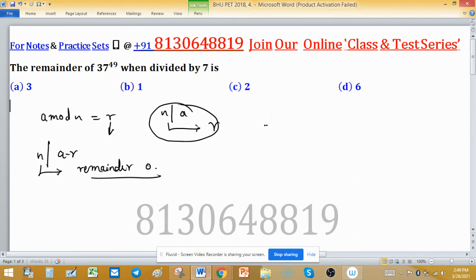So we will apply congruence modulo here when 37 raised to the power 49 is divided by 7, or mod 7. So what is the remainder, meaning value of B or sometimes R? We need to find this value - what is R?